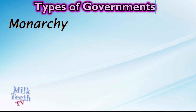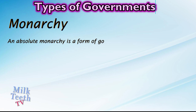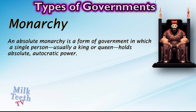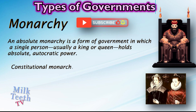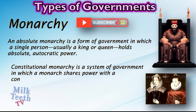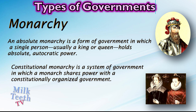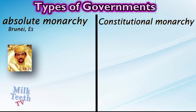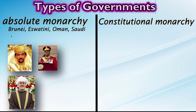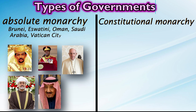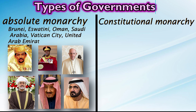Monarchy: An absolute monarchy is a form of government in which a single person, usually a king or queen, holds absolute autocratic power. A constitutional monarchy is a system of government in which a monarch shares power with a constitutionally organized government. Countries like Brunei, Eswatini, Oman, Saudi Arabia, Vatican City, and the United Arab Emirates are examples of an absolute monarchy government system.